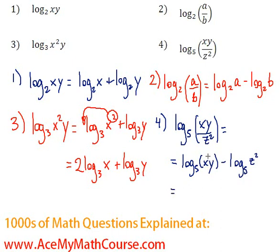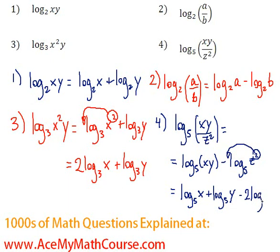Then, I'm multiplying the x and the y, so I can break them down into log base 5 x plus log base 5 y, then I can bring this exponent down as well, and have just minus 2 log base 5 of z. And that's it, that's as far as we can expand that as well.